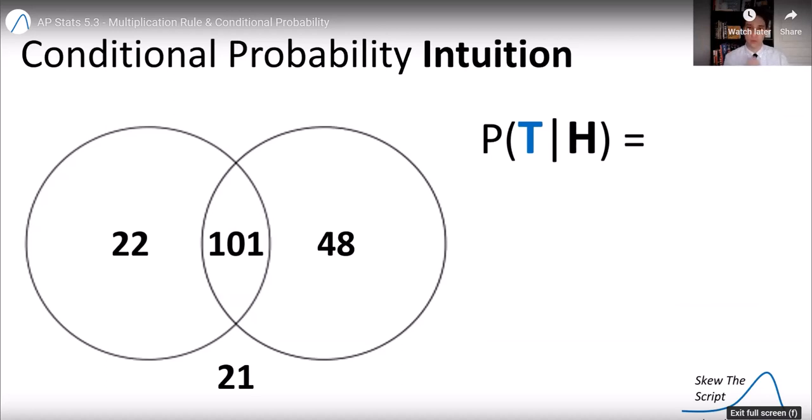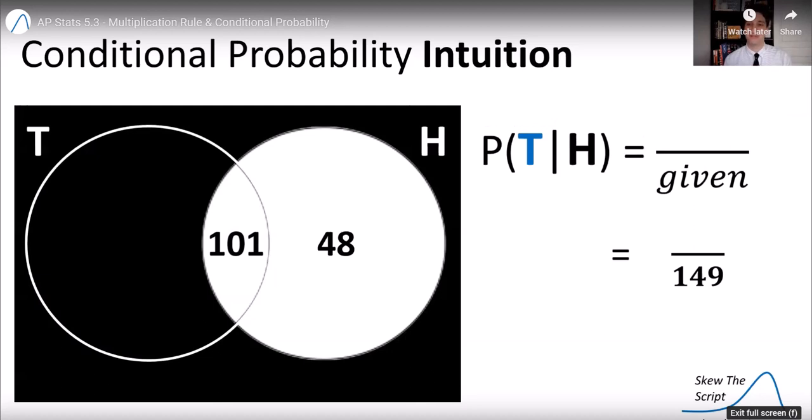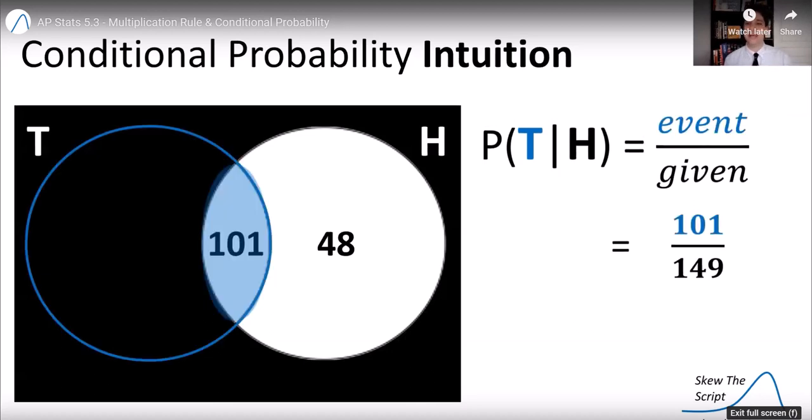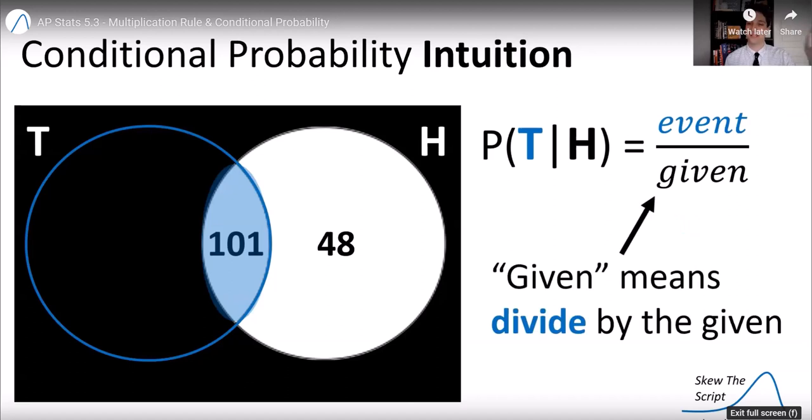Let's talk about an intuitive rule for conditional probability. So probability of T given H was simply the given in the denominator and the people who are still in the event of being tall in the numerator. So essentially, given means do the same thing, but divide by the given. Whatever is given, cut the data set to whatever it is, and then divide by that new total.